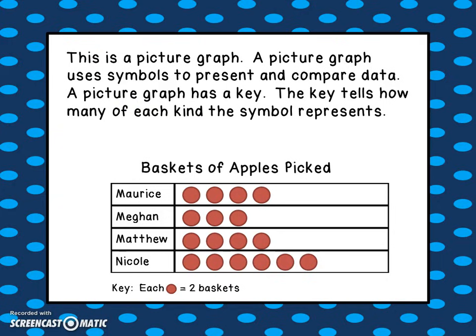This graph is called a picture graph. A picture graph uses symbols to present and compare data. A picture graph has a key — if you look at the bottom, you can see the key there. The key tells you how many of each kind the symbol represents. In this particular graph, each circle equals two baskets.